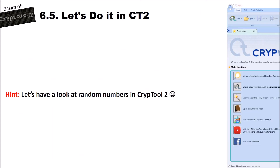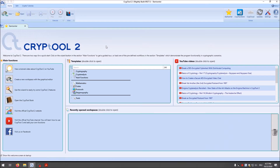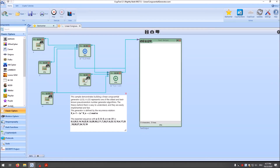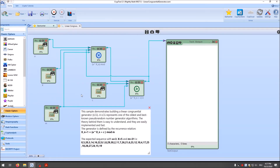Now let's do it in CrypTool 2. I want to have a look at the linear congruential generator, and show how you can generate cryptographic secure random numbers — not true random numbers, as that requires hardware — but cryptographic secure random numbers are possible in CrypTool 2. We have many different random number generators. The linear congruential generator is so simple in CrypTool 2 that it can be constructed using only math components.